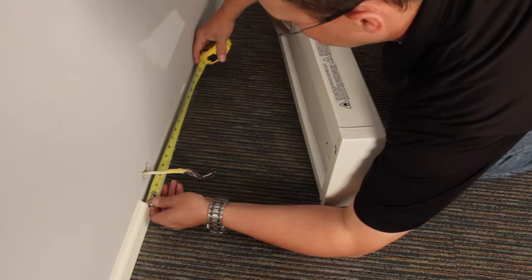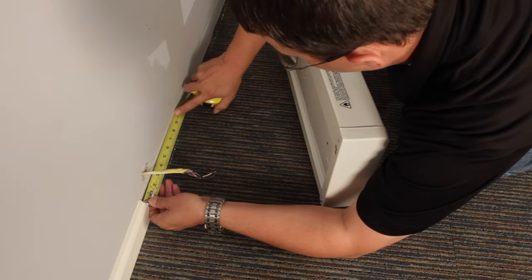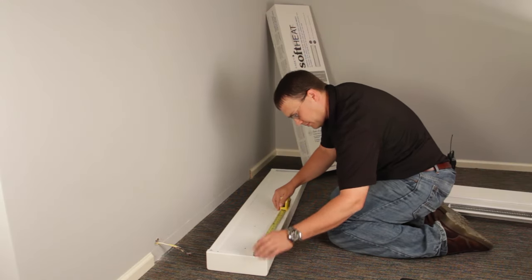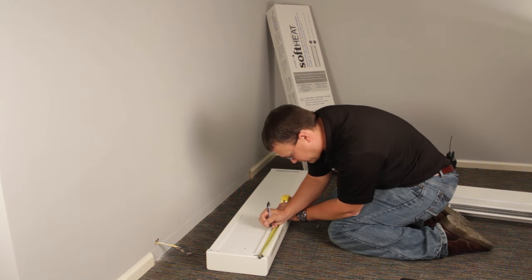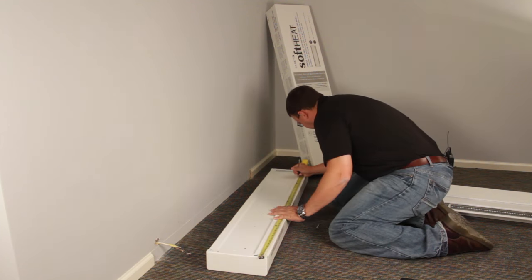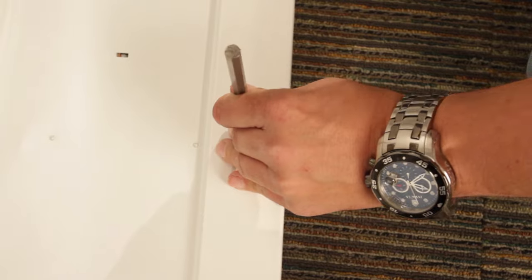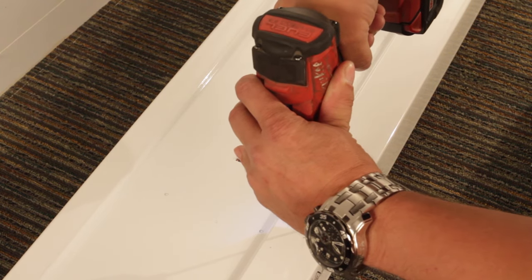Now measure from the edge of the baseboard molding on the wall to the first and second stud that the baseboard was mounted to. Now transfer these measurements onto the soft heat. Use a center punch to mark where you will drill the mounting holes on the soft heat and drill the holes.